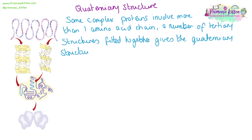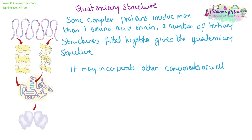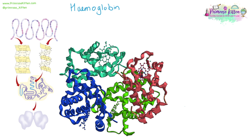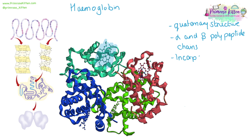Now this doesn't just have to involve polypeptide chains — it can incorporate other components as well, such as inorganic ions. One example of a large globular protein with a quaternary structure, which you can see here, has alpha and beta chains. It also incorporates an inorganic ion inside a complex ion. Here it is — this is the central ion. You can see on this rendering of the protein the alpha helices, the beta pleated sheets, and the inorganic ions all fitting together.